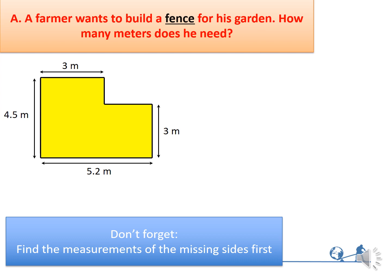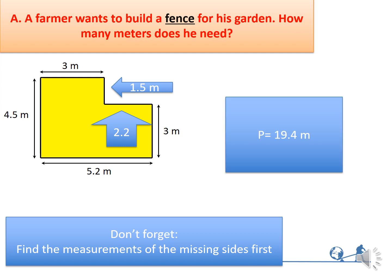But don't forget that if you look at this figure, you will find two missing sides and you have to find their values. The first side you can find by 4.5 minus 3, which is 1.5. And the second side you will find by 5.2 minus 3, which is 2.2. And then when you add all the sides, you will get 19.4 meters.